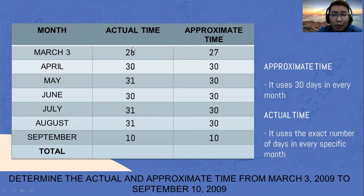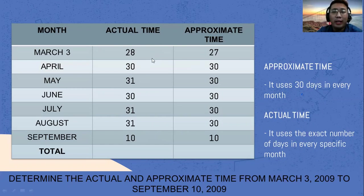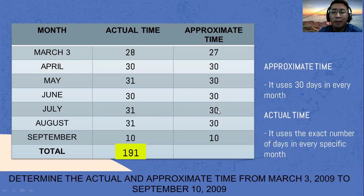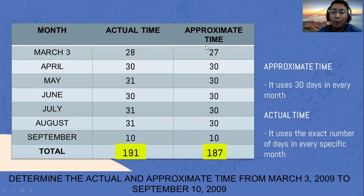The next thing to do is to add all these values to get the actual and approximate time from March 3, 2009 to September 10, 2009. For actual time: 28 plus 30 plus 31 plus 30 plus 31 plus 31 plus 10 — the answer is 191 days. For approximate time: 27 plus 30 plus 30 plus 30 plus 30 plus 30 plus 10 — the answer is 187 days.